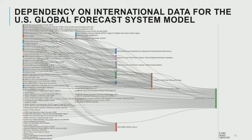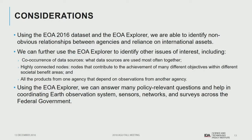Here's a much more complicated product: the U.S. Global Forecast System model, colloquially known as the national weather model. It has many international inputs — many shared through WMO40 from different nations, including EUMETSAT observations, Canadian observations, and Japanese observations — all being ingested through international data sharing agreements into our operational weather model. The EOA Explorer demonstrates how we can identify non-obvious relationships between agencies and reliance on international assets, identify co-occurrence of data sources, highly connected nodes, and other dependencies to answer policy-relevant questions.